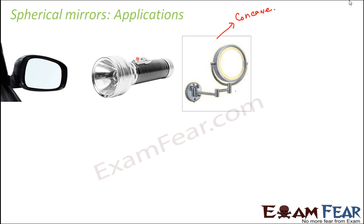If you talk about the rear view mirror of your car, what kind of mirror is this? This is nothing but a convex mirror, because it gives an erect image. It also gives a diminished image, which are characteristics of a convex mirror.